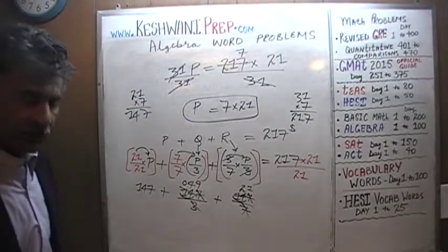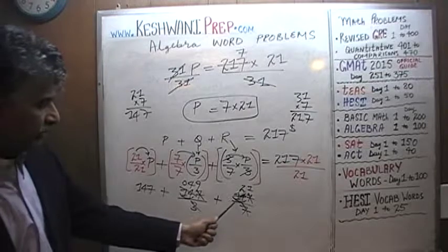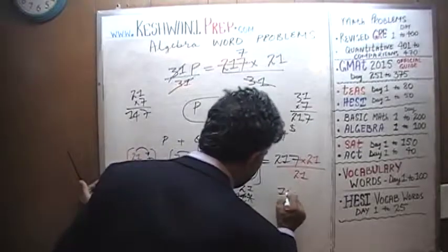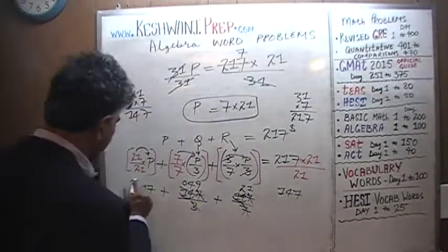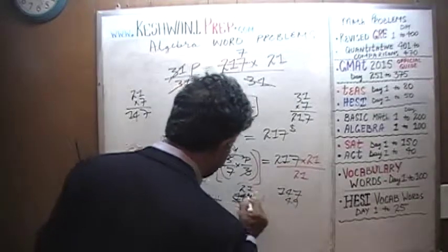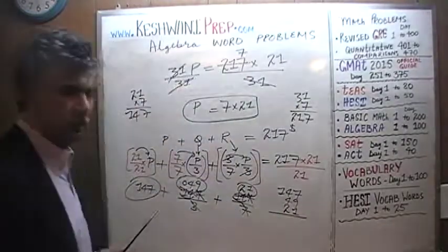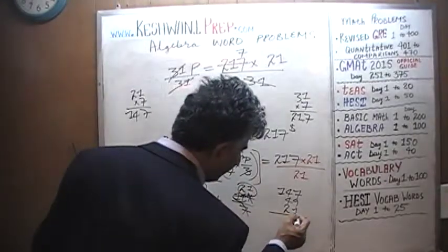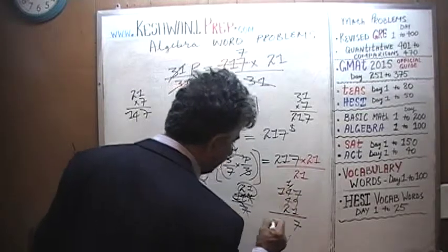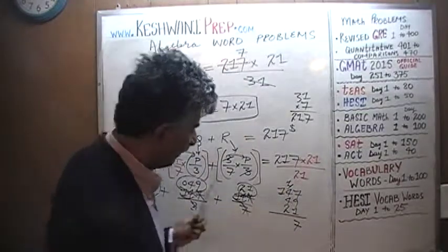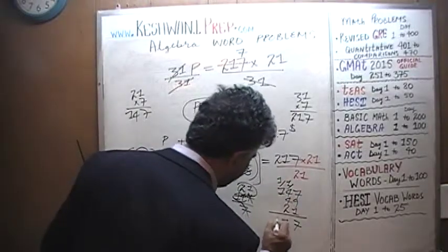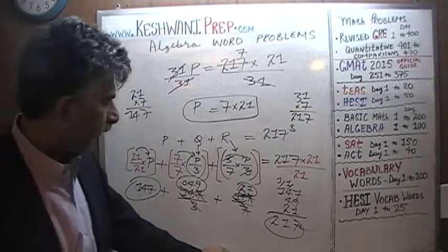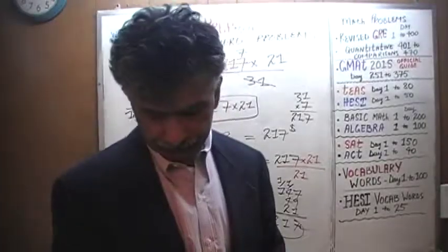Now, the only thing we have to confirm is if 147 plus 49 plus 21, if these three numbers add up to 217, then our work is correct. Let's do it here. Keep your fingers crossed because if they add up to 217, we are home free. 9 plus 1 is 10, 10 plus 7 is 17, carry 1. 4 plus 4 is 8, 8 plus 2 is 10, 10 plus 1 is 11, carry 1. 1 plus 1 plus 1 is 2. 217. It works out. Our answer is indeed correct. Bye now.